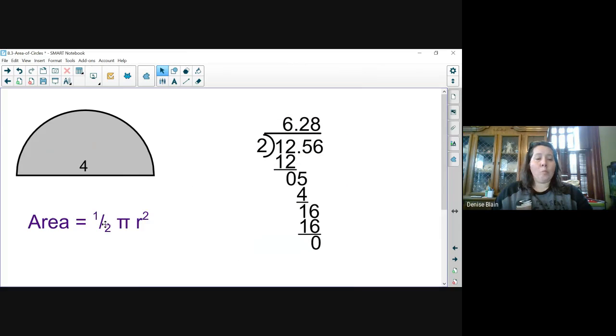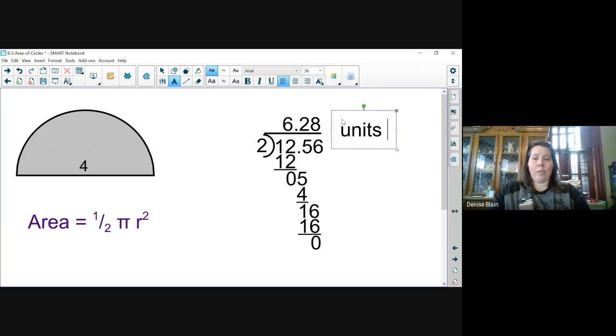So we multiply by a half, we also divide by two. So 12.56 divided by two is going to give us 6.28 units squared.